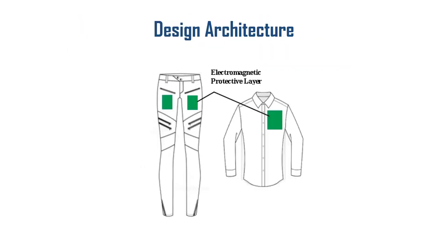The design architecture is developed to understand the most probable locations to protect human organs from electromagnetic radiation. These three locations are mostly exposed to electromagnetic radiation, so they are primarily identified, and further locations can be added.